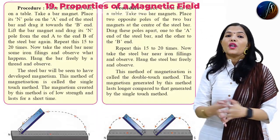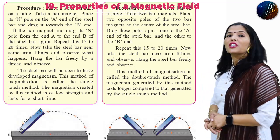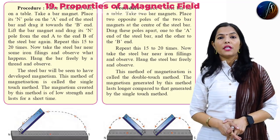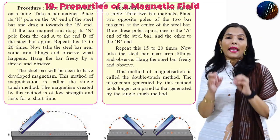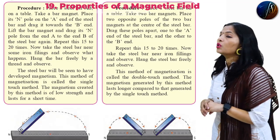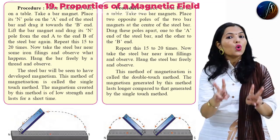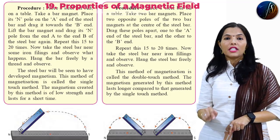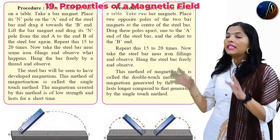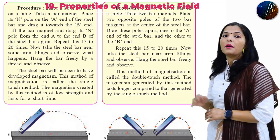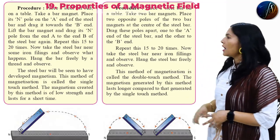So students, why is this method called the double touch method? Because the magnetism is produced in the steel bar by using two bar magnets — that's why we call this method the double touch method.